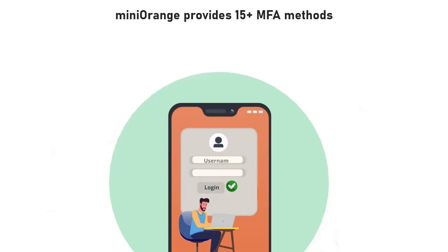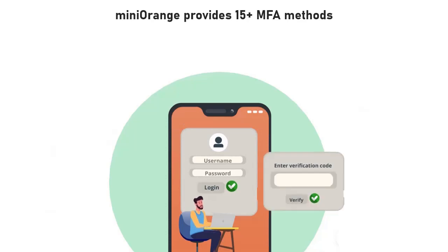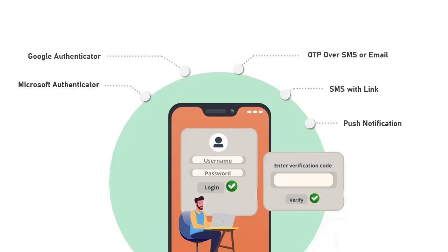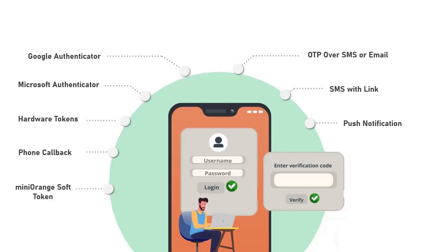Mini Orange provides 15 plus MFA methods like OTP over SMS or Email, SMS with Link, Push Notifications, Google Authenticator, Microsoft Authenticator, Hardware Tokens, Phone Callback, Mini Orange Soft Token, and many more.